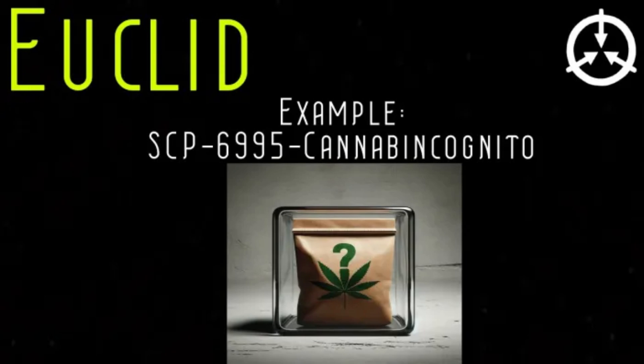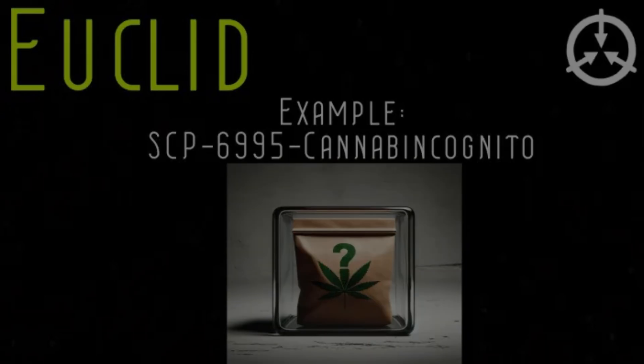As a note, any SCP that is autonomous or sapient is generally classified as Euclid due to the inherent unpredictability of an object that can think of its own accord.